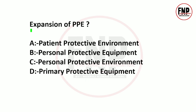Next question: Expansion of PPE. PPE kit - jo aap sab ne corona ke dauran bhi bahut zyaada use kiye the aur hospitals ke andar as usual bhi istemal kiye jaate hain - iska full form kya hota hai? Options: A - Patient Protective Equipment, B - Personal Protective Equipment, C - Personal Protective Environment, D - Primary Protective Equipment. The right answer is option B: Personal Protective Equipment.